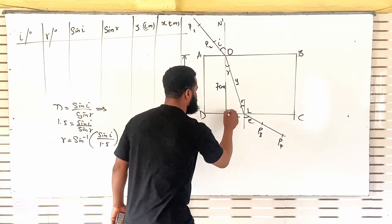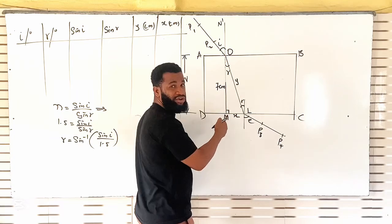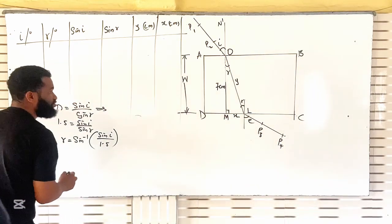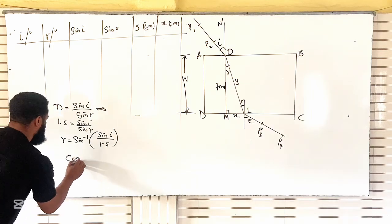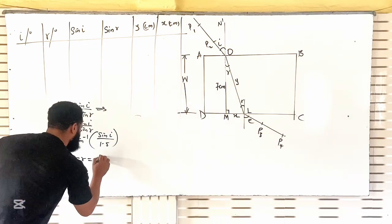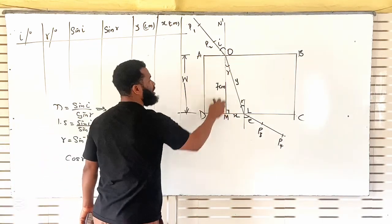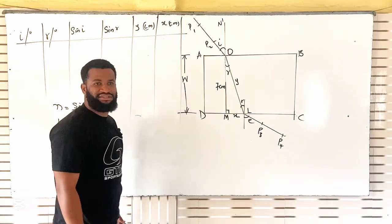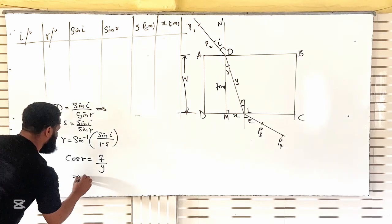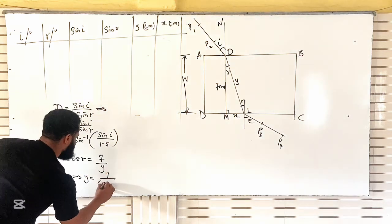According to SOHCAHTOA or trigonometric ratios, this is angle 90, so I'm going to say that cos R is equal to adjacent over hypotenuse, which is 7 over Y. That simply means that the value of Y is going to be 7 all over cos R.